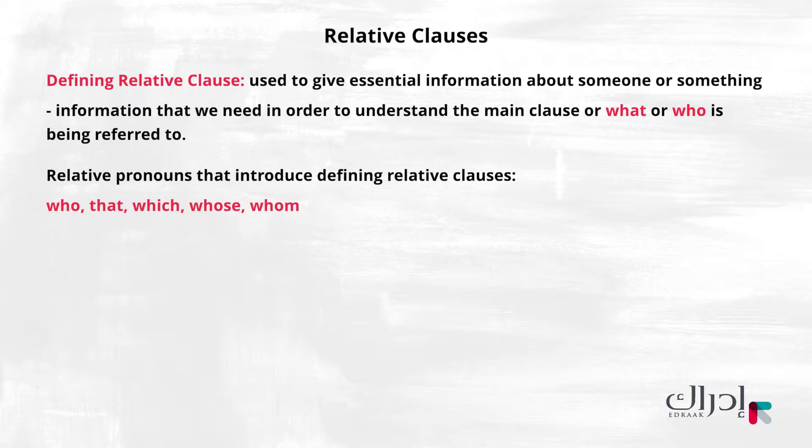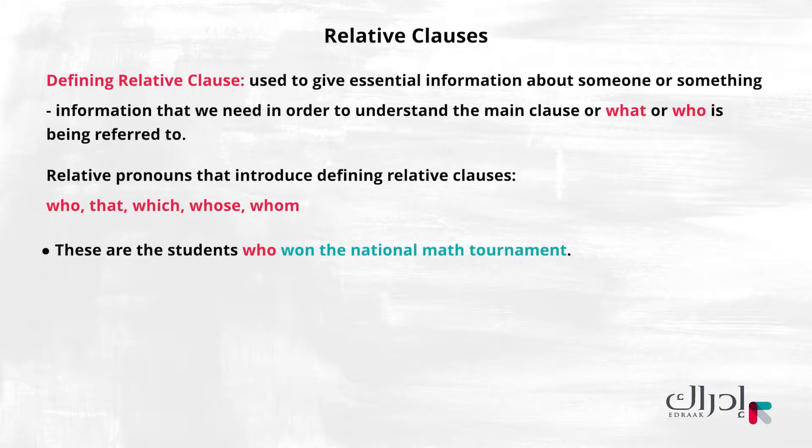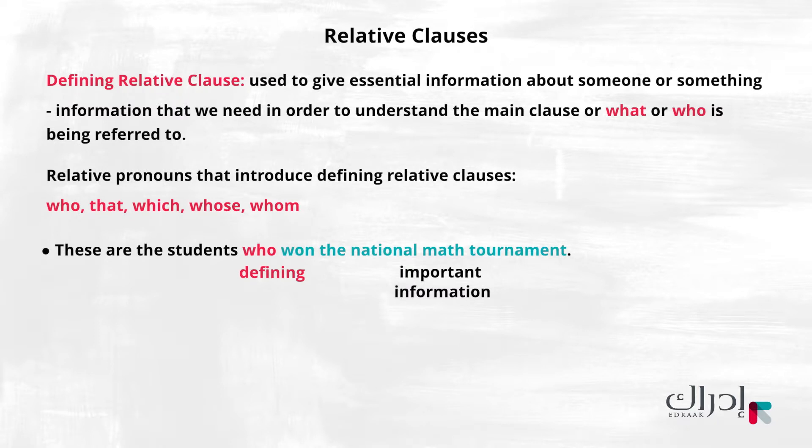Look at the example: 'These are the students who won the National Math Tournament.' The defining relative clause describes important information about the main clause to help us understand it and tells us which students we are talking about. 'These are the students' is a correct sentence, but the meaning is not complete. Not every student won the National Math Tournament — we are only talking about the students who did.